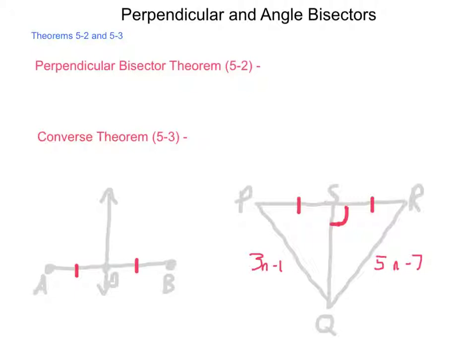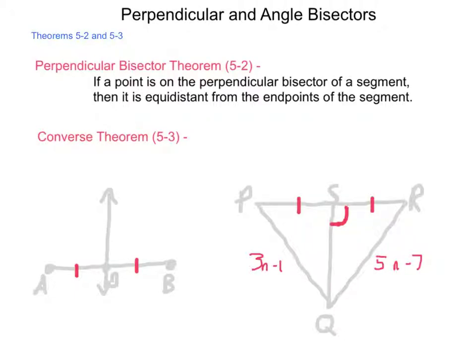So, let's get started with 5-2. The perpendicular bisector theorem, 5-2, states: if a point is on the perpendicular bisector of a segment, then it is equidistant from the endpoints of the segment.